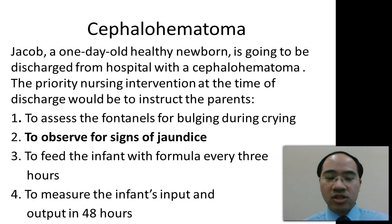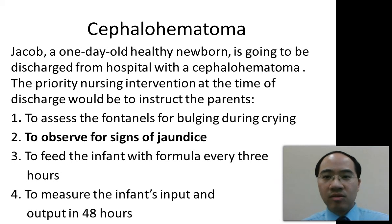The correct answer is 2, to observe for signs of jaundice. Bilirubin is a pigment from hemoglobin that is released when the red blood cells are lysed. The best answer, of course, then, is 2, to observe for signs of jaundice.